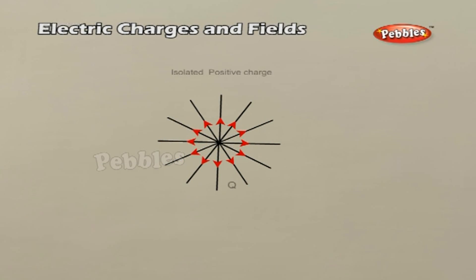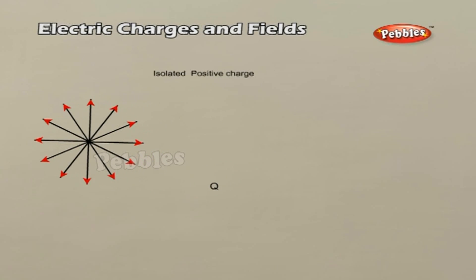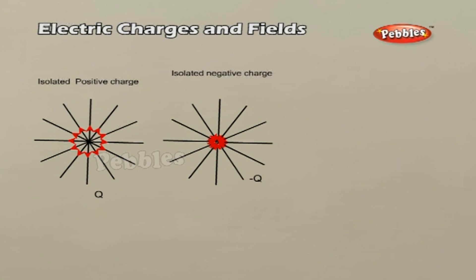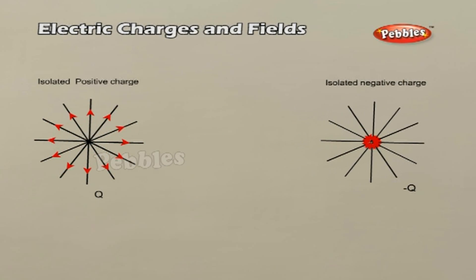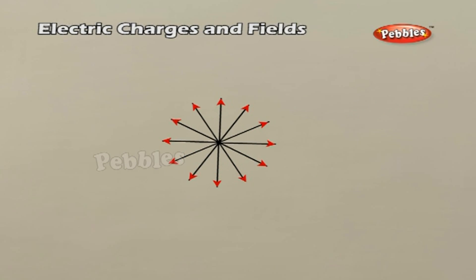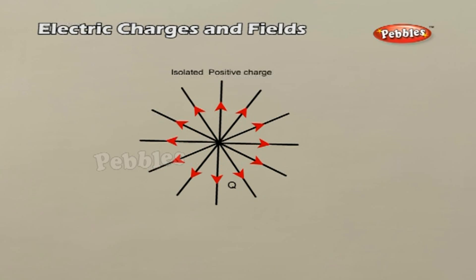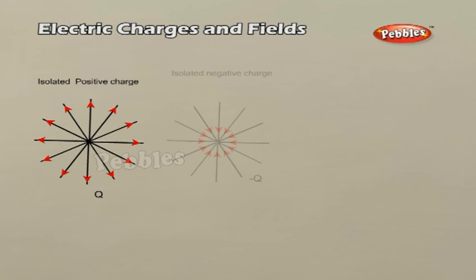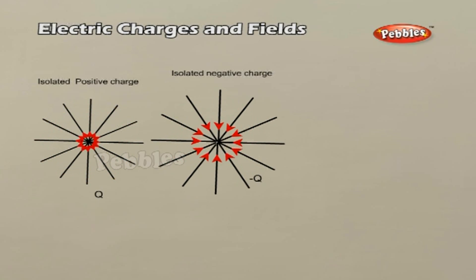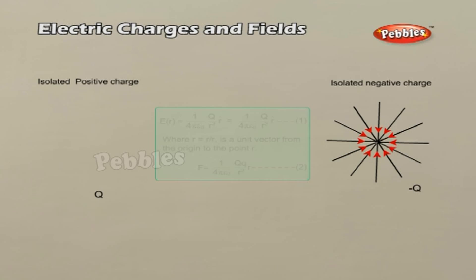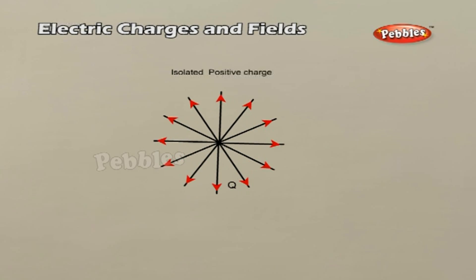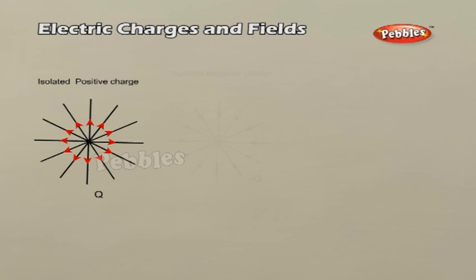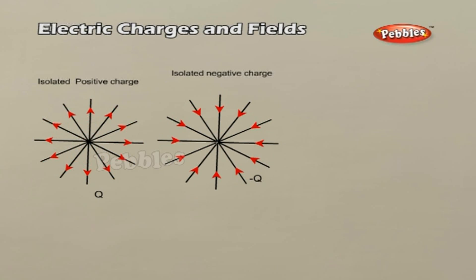Electric Field. Consider a point charge Q placed in vacuum at the origin O. If we place another point charge at point P where OP equals R, the charge Q will exert a force on it as per Coulomb's law. The electric field produced by charge Q at a point R is given by equation 1. The force F exerted by Q on a small test charge q is given by equation 2. Thus, the electric field due to a charge Q at a point in space may be defined as the force a unit positive charge would experience if placed at that point. Q is called the source charge, and the small charge q which tests the effect of the source is called a test charge.